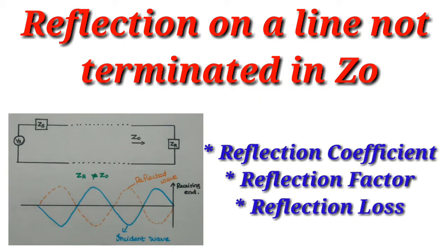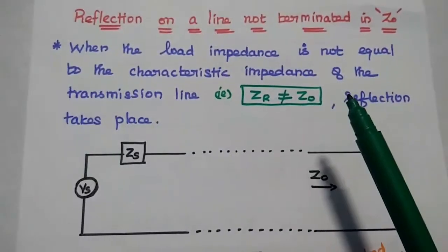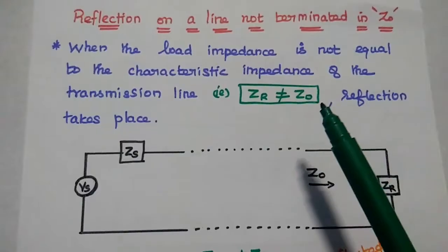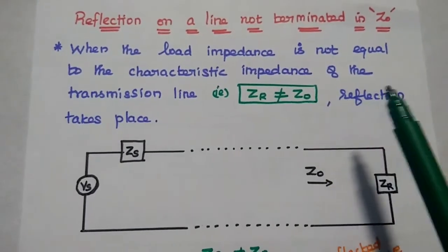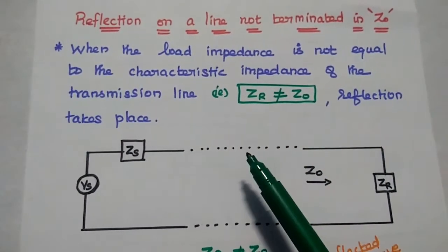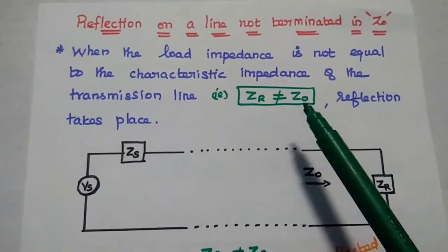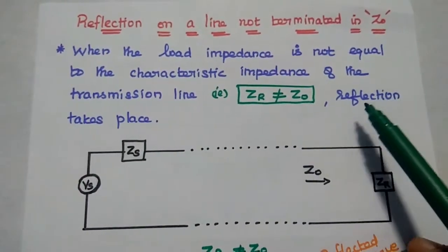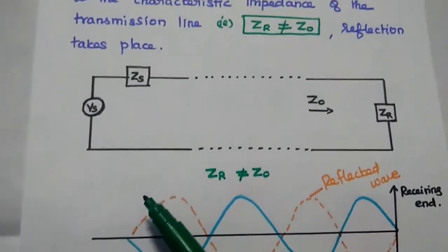Dear students, now we are going to discuss the reflection on a transmission line not terminated in Z naught. When the load impedance is not equal to the characteristics impedance of the transmission line, then reflection takes place. That is, if ZR is not equal to Z naught, then the reflection takes place in the transmission line.